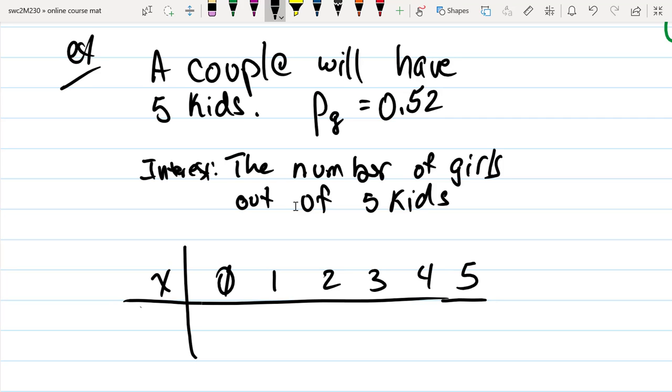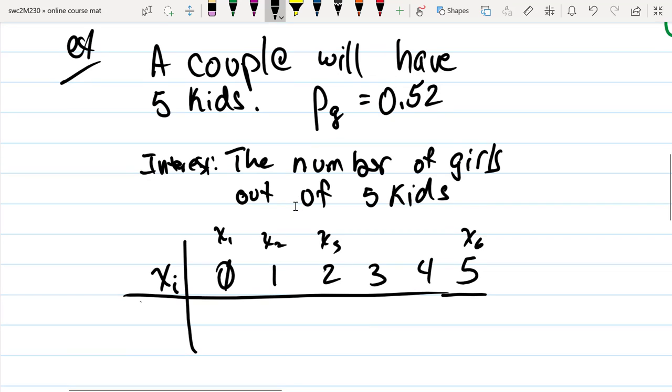Each one of those could be labeled, so this might be X sub 1, X sub 2, X sub 3, and so forth, up through the last one. Six different possibilities. The random variable is what the outcomes could be.